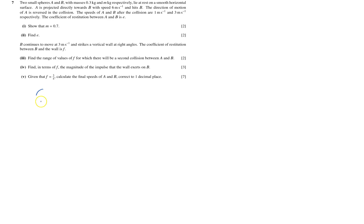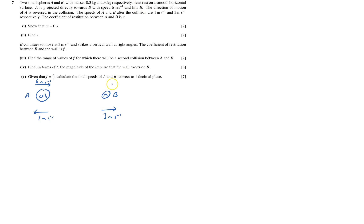Two small spheres: sphere A has mass 0.3 kg and sphere B has mass M. A is projected towards B at 6 metres per second. After the collision, the direction of A is reversed — A moves at 1 m/s and B moves at 3 m/s in the original direction. B was initially at rest. This is part one.